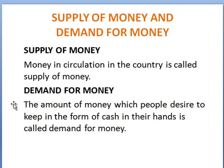Next is the concept of supply of money and demand for money. Money in circulation in a country is called supply of money — it includes currency notes, bank deposits, and all currency issued by financial institutions. Demand for money, on the other hand, is the amount of money which people desire to keep in the form of cash. They may need it for day-to-day expenses, precautionary motives, or to take advantage of business deals — these people are called speculators. The equality of supply of money and demand for money is important for economic stability. If demand exceeds supply, the value of money will increase; if demand is less than supply, the value of money will decrease, affecting interest rates, bank savings, and investment levels.